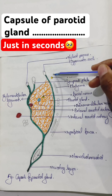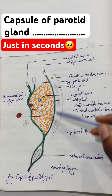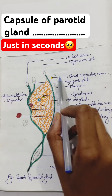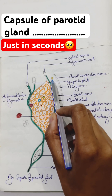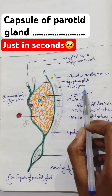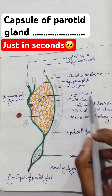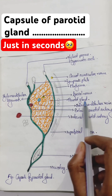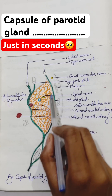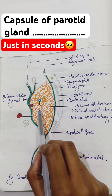The superficial part is supplied by the great auricular nerve, which is mentioned here, and the platysma muscle, which is the muscle of the neck, we can see here. Then the facial nerve passes through the parotid gland.